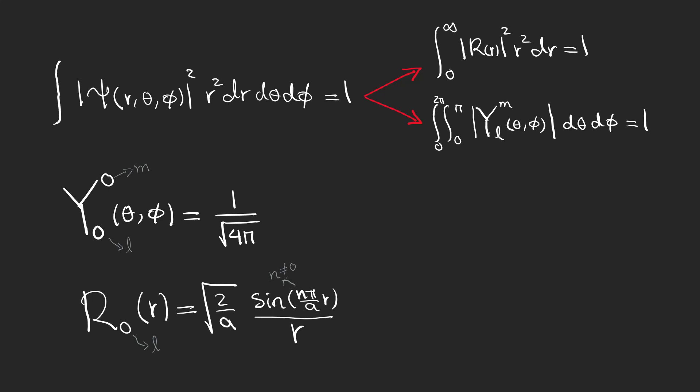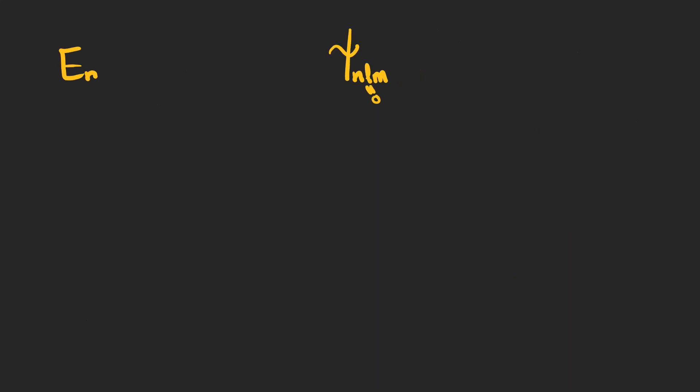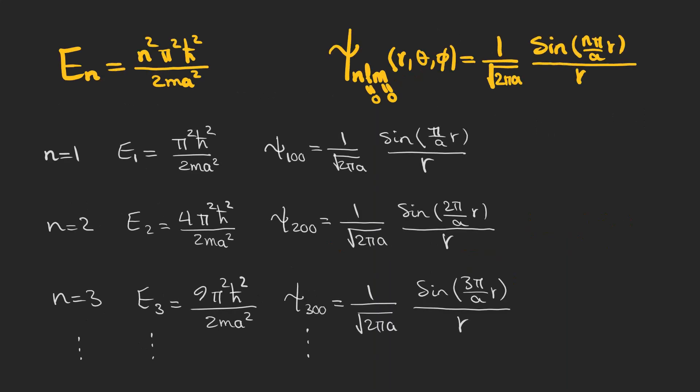Pay attention to the quantum numbers written by N, L, and M and we'll talk about them in more details later. And finally, after a few videos, we have just managed to find the wave function for the infinite spherical well and just for L equals 0. So these are the energy and wave function expressions for a few of the first energy levels. Pay attention that stationary states are shown by N, L, and M, which are our quantum numbers, and the energy level is just dependent on N.